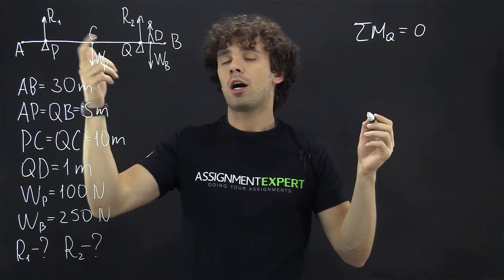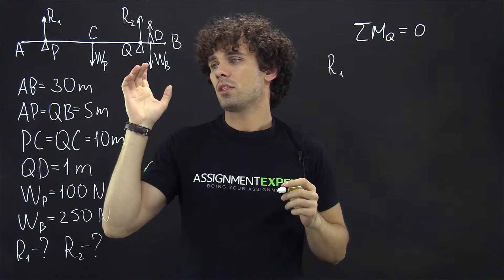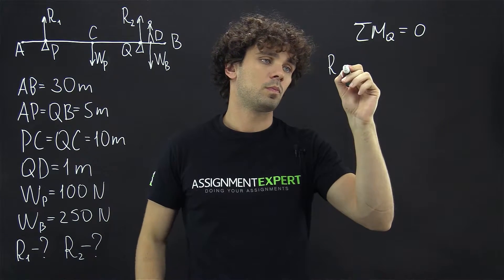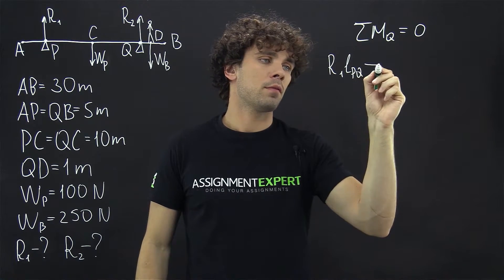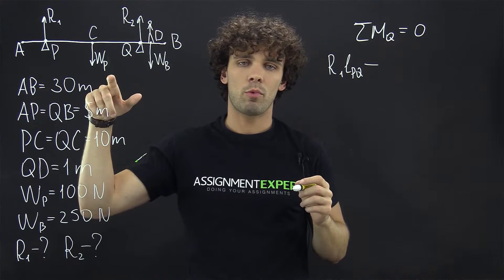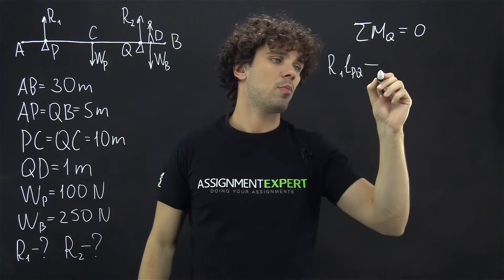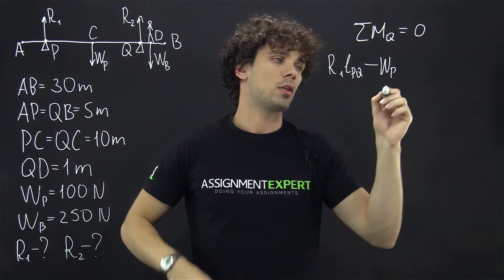We have R1, which is away from point Q, and this distance is LPQ. Then we have a negative sign because of the counterclockwise direction of the weight of the plank. So we have WP times the distance to point Q, and this is LCQ.